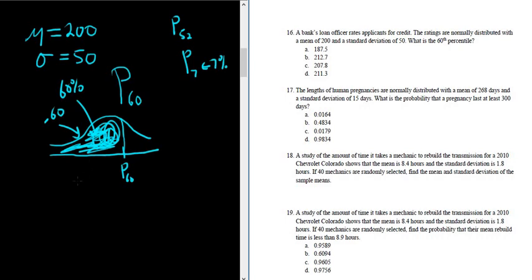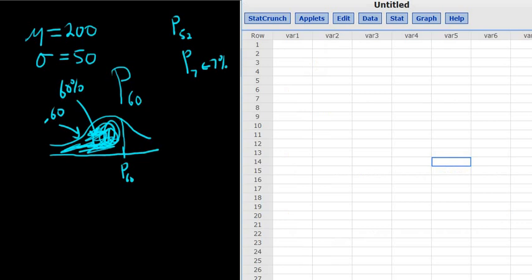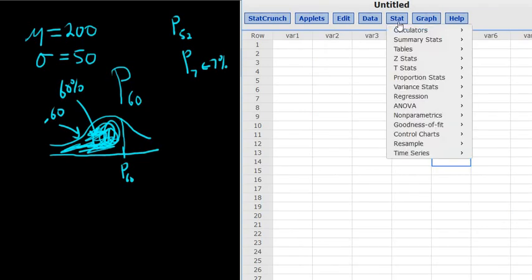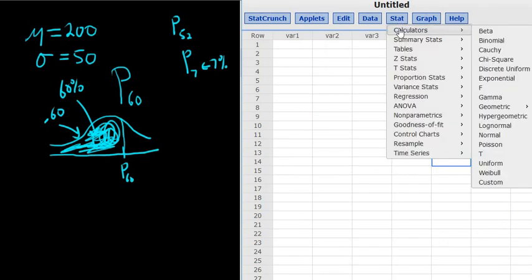So what we'll do now is go to StatCrunch to get the answer. In StatCrunch, you go to Stat, Calculators, and then you go to Normal.